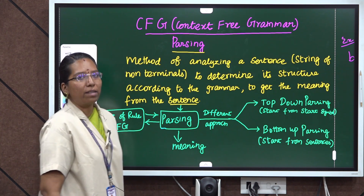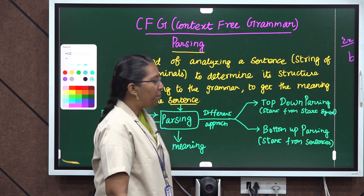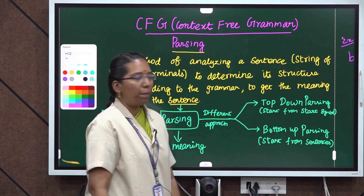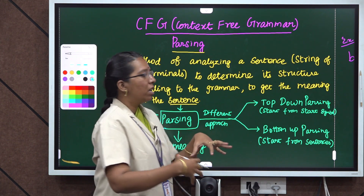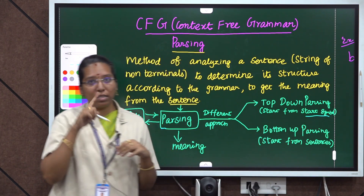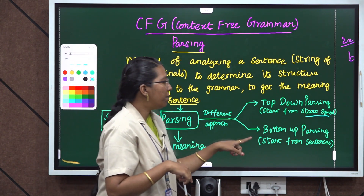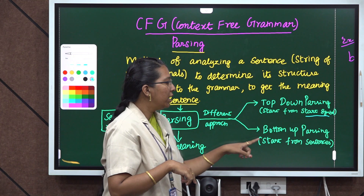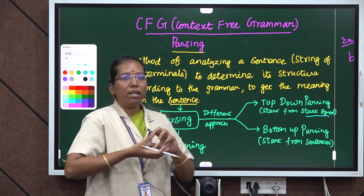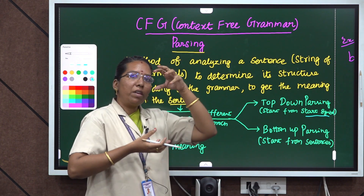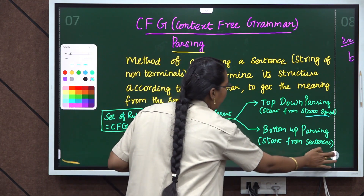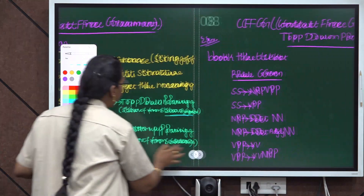In parsing we have different approaches. One is top-down parsing, another one is bottom-up parsing. Top-down means we start from the starting symbol, that is S. In bottom-up parsing, we start from the sentence and lead up to the symbols. Let's see an example.